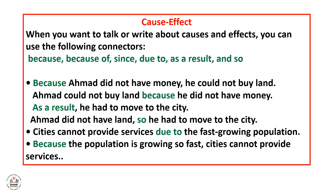For example: Because Ahmad did not have money, he could not buy land. Or: Ahmad could not buy land because he did not have money. Here we use 'because.' As a result, he had to move to the city. Or: Ahmad did not have land, so he had to move to the city. Here we use 'as a result' and 'so.'